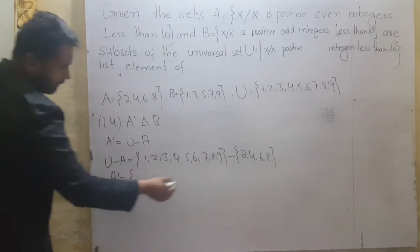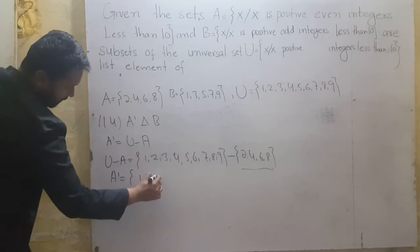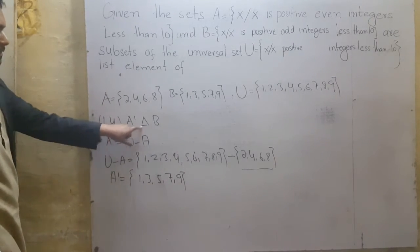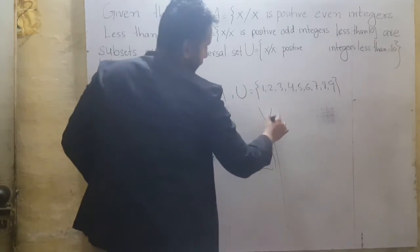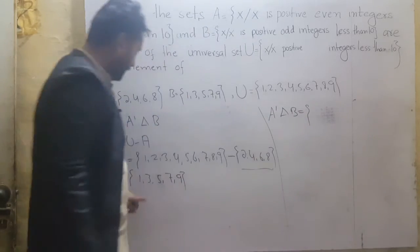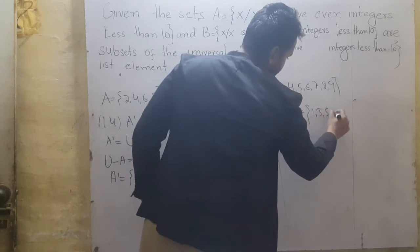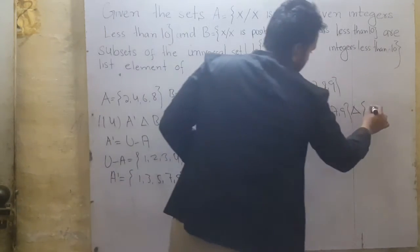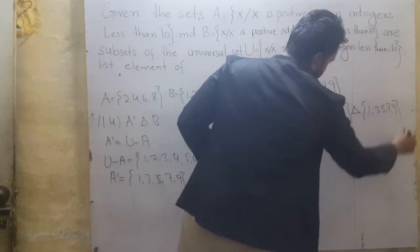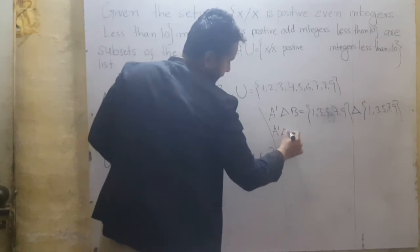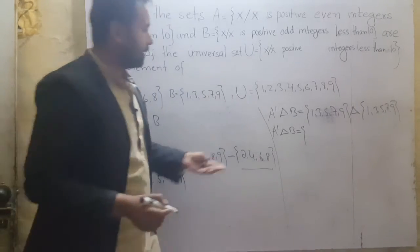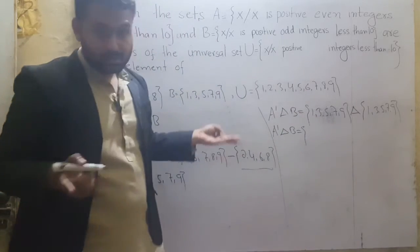A complement मिला — since even numbers are subtracted from U, only odd numbers remain: {1, 3, 5, 7, 9}. Now we take the symmetric difference with B. A complement symmetric difference B: A complement = {1, 3, 5, 7, 9} and set B = {1, 3, 5, 7, 9}. In symmetric difference, same elements from both sets are removed — all elements are the same, so all are subtracted. The answer is the null set.